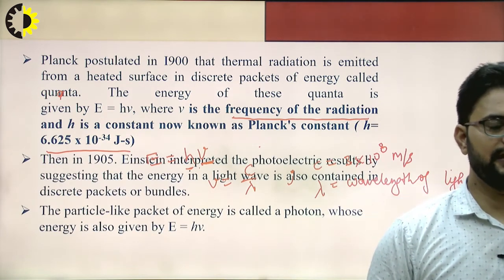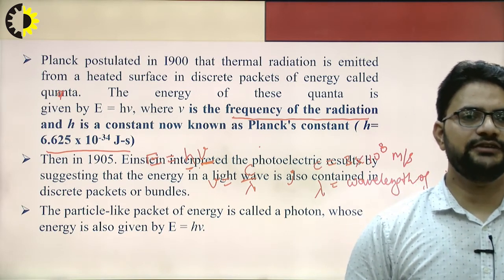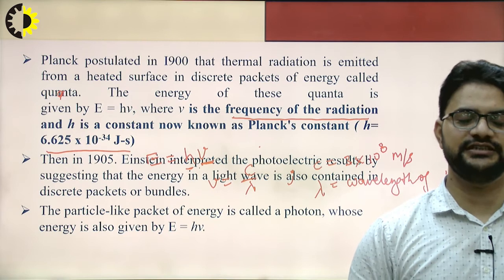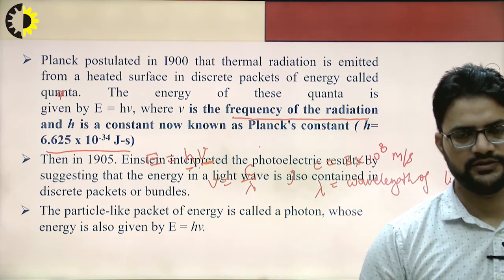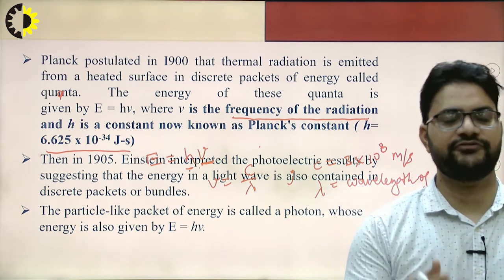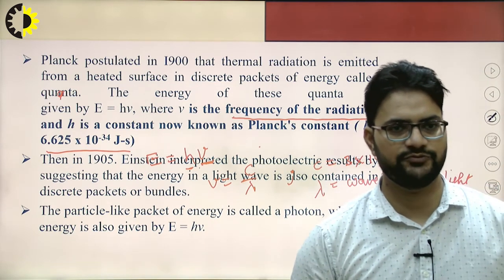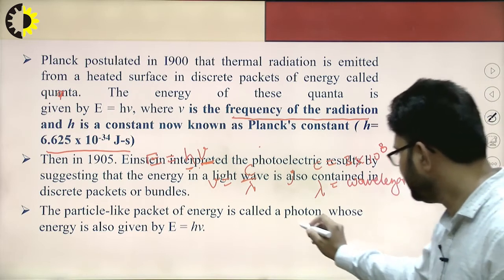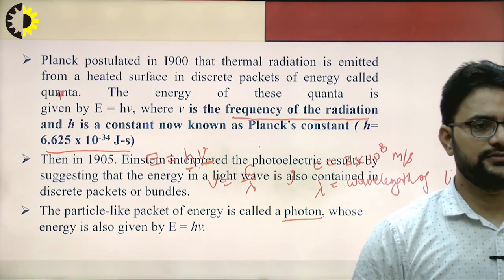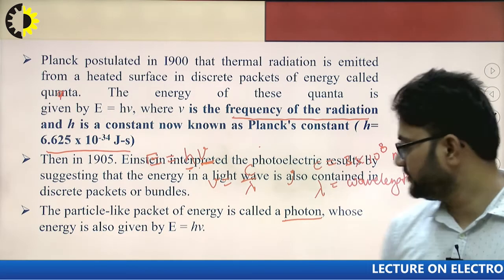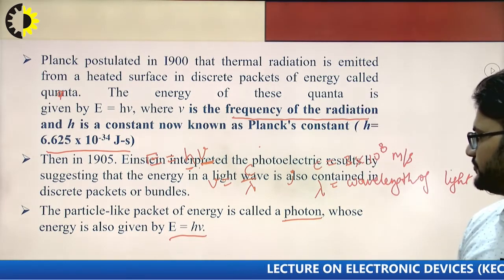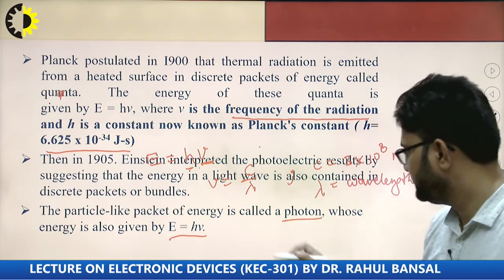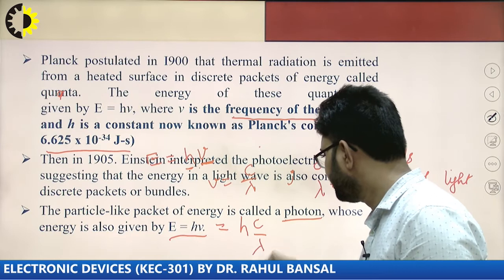Then Einstein in 1905 interpreted the photoelectric result by suggesting that the energy in a light wave is also contained in discrete packets or bundles. This was postulated by the photoelectric effect. The particle-like packet of energy is called a photon. The energy of the photon is given by E = hν = hc/λ.